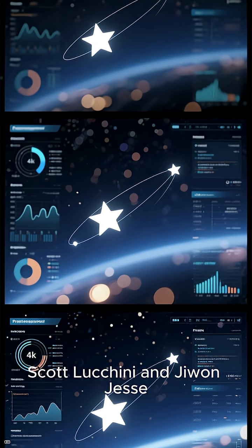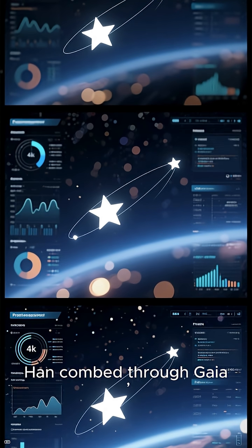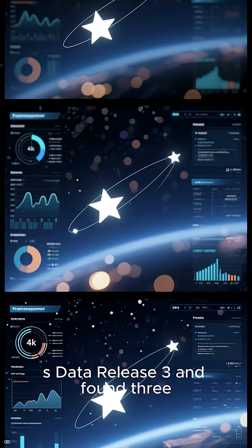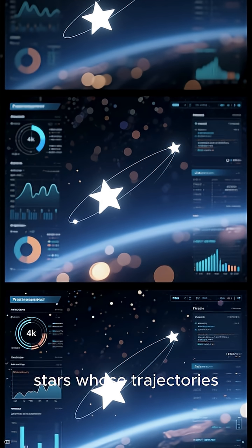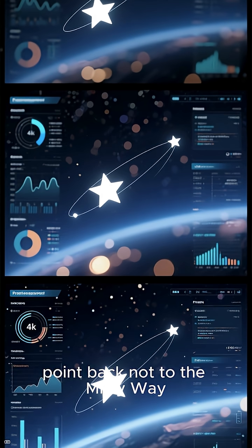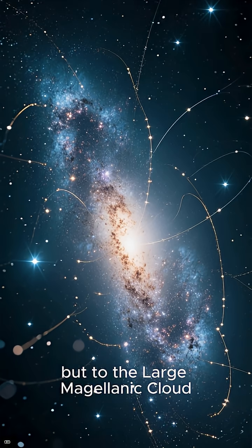Astronomers Scott Lucchini and Jiwon Jesse Han combed through Gaia's Data Release 3 and found three stars whose trajectories point back not to the Milky Way, but to the Large Magellanic Cloud.